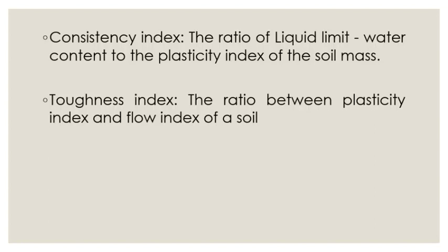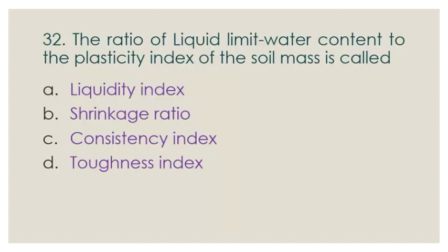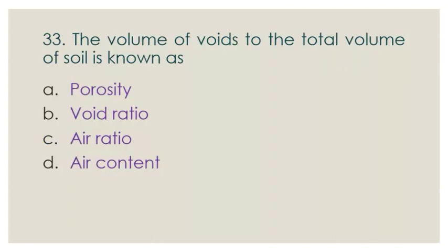Consistency index is the ratio of liquid limit minus water content to the plasticity index of the soil mass. Toughness index is the ratio between plasticity index and flow index of the soil. Our question asks for that ratio, so option C — consistency index — is the correct answer.